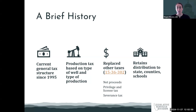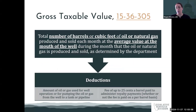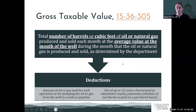When the production tax went into effect, it replaced the net proceeds tax, the privilege and license tax, and the severance tax. The goal of the new tax and its distribution was to retain the distribution levels to states, counties, and schools. There are a few terms to understand: the first is gross taxable value, contained in 15-36-305, which is the base for the tax. It's the number of barrels or cubic feet of oil or natural gas produced and sold each month at the average value at the mouth of the well. There are deductions for oil or gas used to operate the well and for pumping oil or gas to a tank or pipeline, as well as a deduction for the administration of royalty payments — a fee of up to 25 cents per barrel.